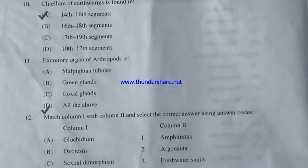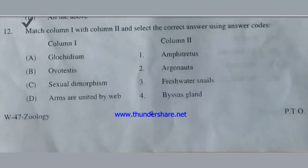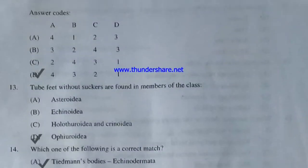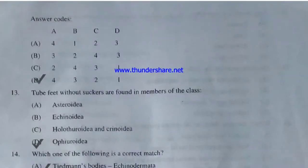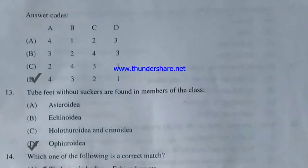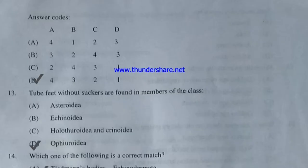Match column one with column two and select the correct answer. Column one: Glochidium, overtestis, sexual dimorphism, and arms united by web. In column two, Glochidium connects with Biceps gland and overtestis connects with freshwater snails. Checking the answer codes, A connects with 4 and B connects with 3. This match is found in option D, so the correct option is D.